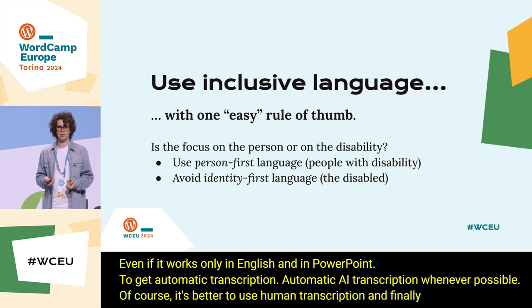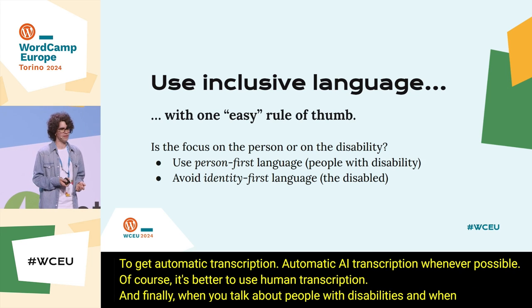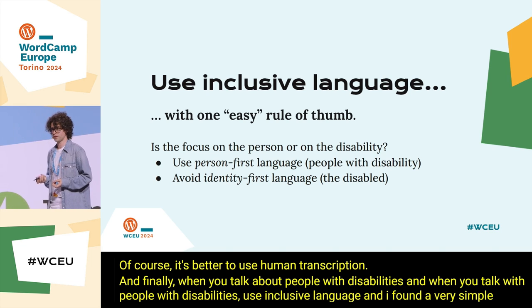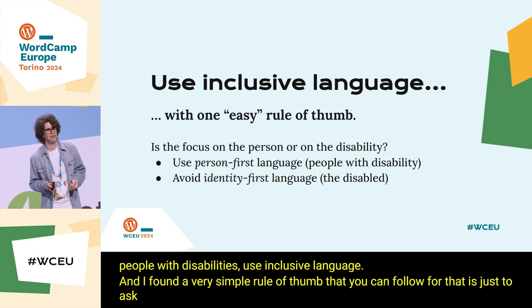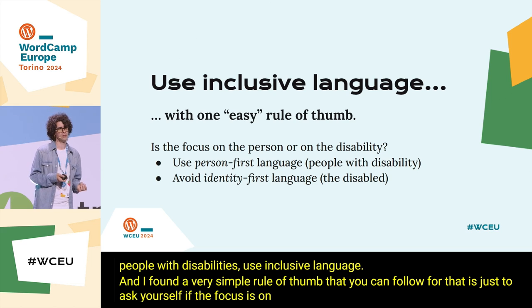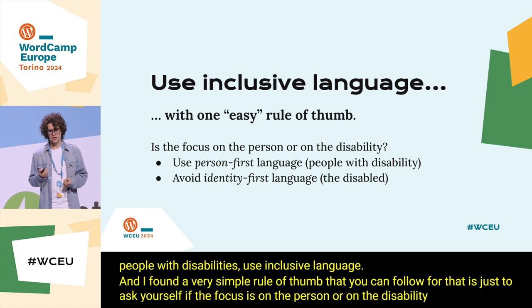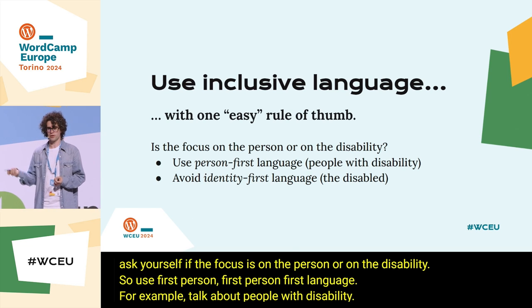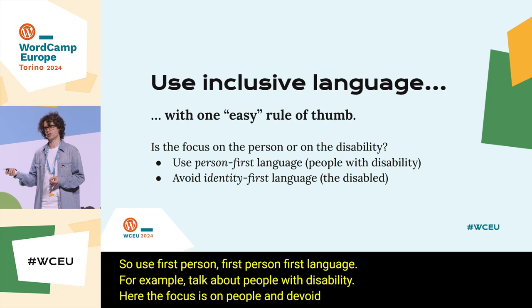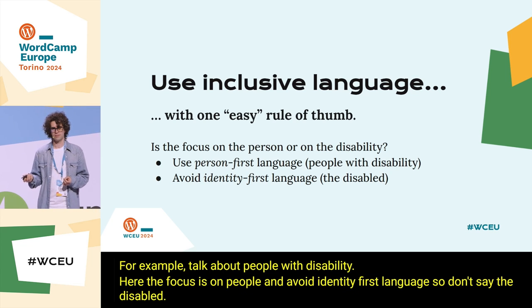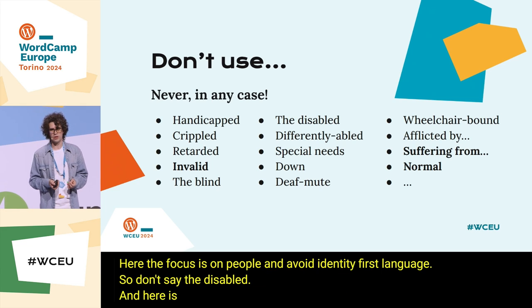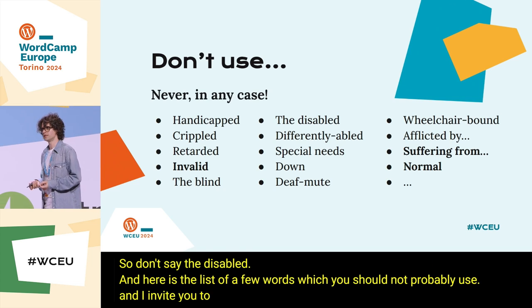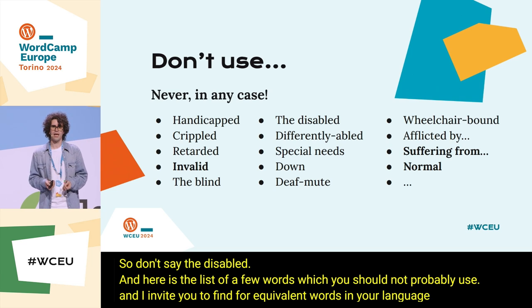And finally, when you talk about people with disabilities, use person-first language. A simple rule of thumb: ask yourself if the focus is on the person or on the disability. So use person-first language — for example, say 'people with disability,' where the focus is on people. Avoid identity-first language; don't say 'the disabled.' Here is a list of words you should probably not use, and I invite you to find equivalent words in your language and learn how to use them properly.